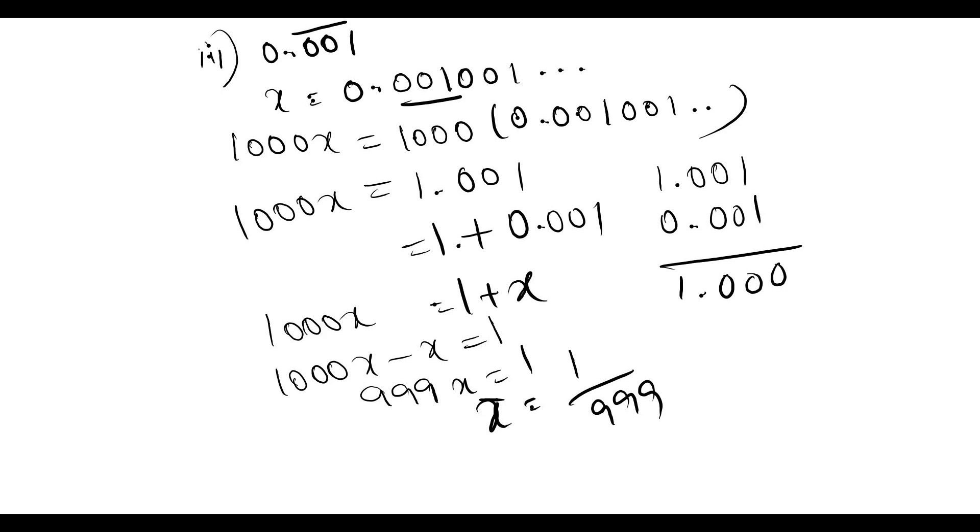1000x equals 1000 into that value, so this will give 1.001. Convert this into a numerical value plus x form. Subtract 0.001 from 1.001, we will get 1, so 1 plus x. Take x to the other side, 1000x minus x will be 999x, which equals 1 by 999.